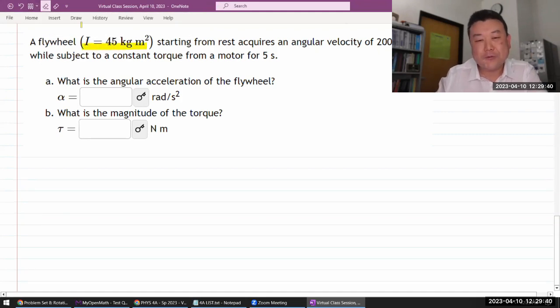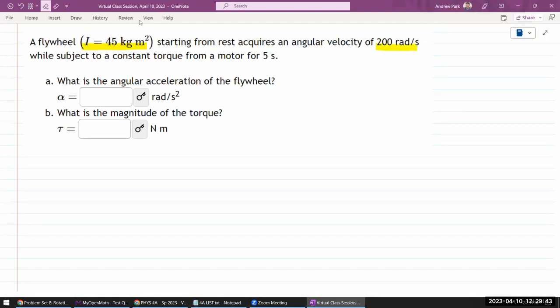Starting from rest, acquires an angular velocity. Okay. So let me just label this omega. While subject to a constant torque from a motor for some duration of time, delta T. Okay.